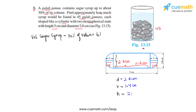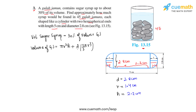To find the volume of a gulab jamun, we add the volumes of the two hemispheres and the cylinder. We write it as: π r² h (volume of the cylinder) plus 2 × (2/3) π r³ (volume of the two hemispheres). Taking out π r² as a common factor, we are left with: π r² (h + 4/3 r).